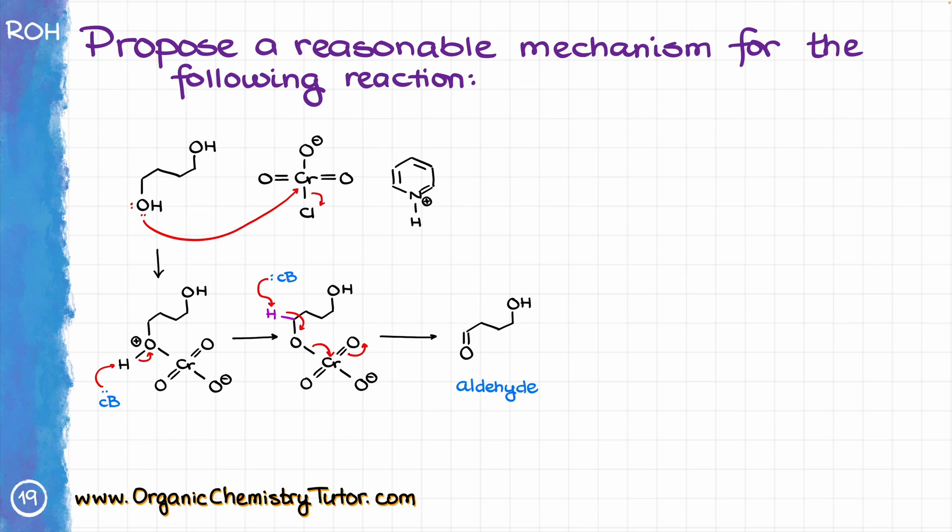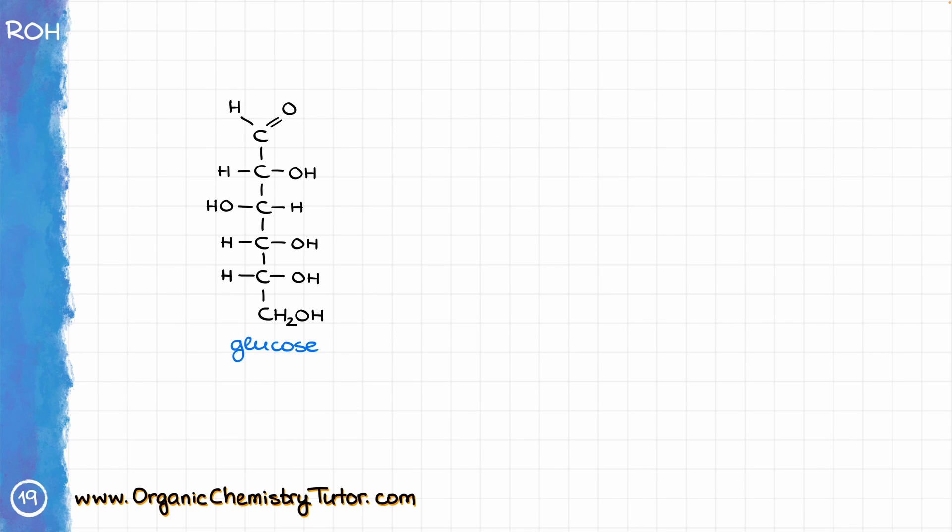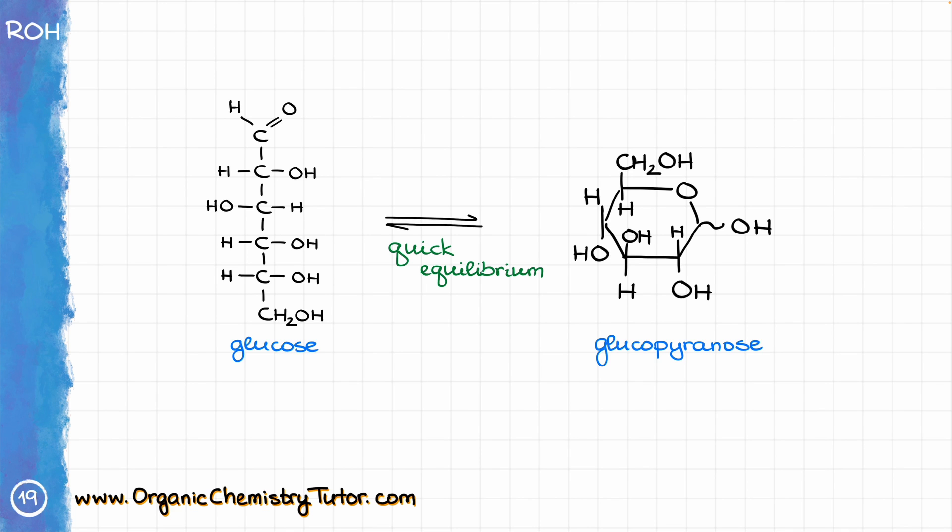When we have an aldehyde and an OH group inside of the same molecule, they are going to go into a very quick equilibrium between the open chain and the cyclic form. Just like in the case of glucose, for instance, where I have this aldehyde over here, and I have an OH group, the glucose exists in a very quick equilibrium between the open chain form and a cyclic form, which we call glucopyranose. Interestingly enough, in this equilibrium, the cyclic form is actually favored. We also can call this cyclic form a lactol, which is just going to be a chemical name for a cyclic hemiacetal. When it comes to this type of a cyclic structure, that cyclic structure is going to be favored at equilibrium.